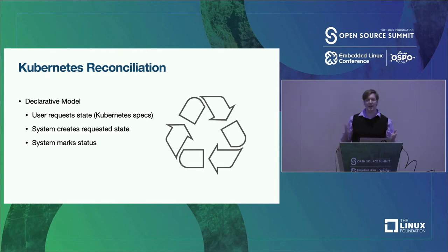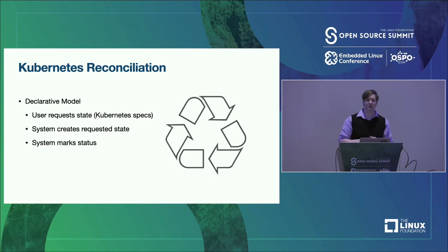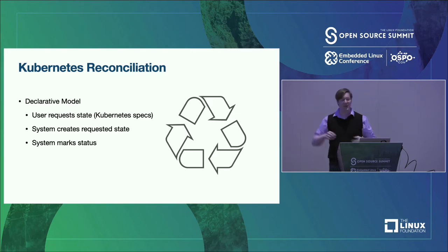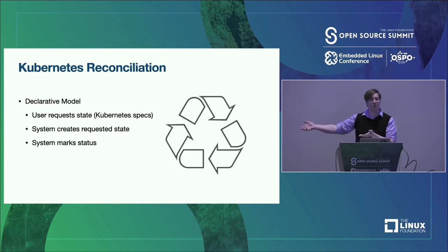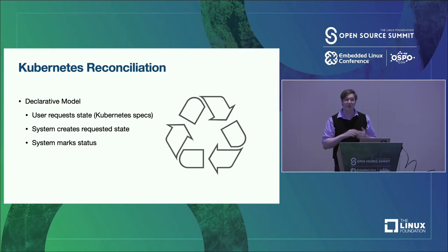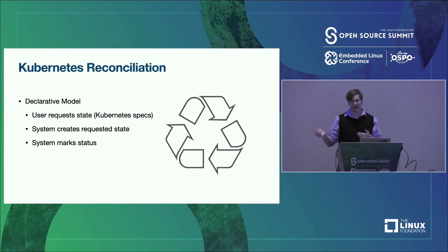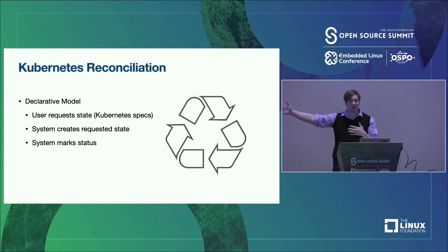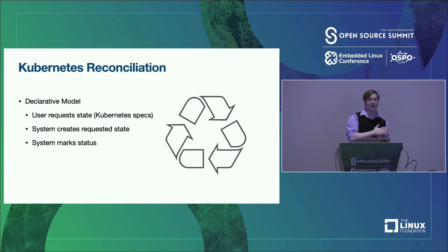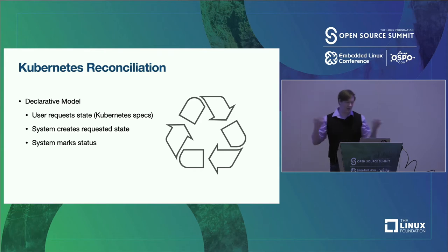Reconciliation is how stuff actually happens in a Kubernetes cluster. It follows a declarative model, which is a little weird because most people are more familiar with an imperative model. In Kubernetes, you interact with the cluster by requesting state — you say 'I would like three containers running this image,' and that state is written to an etcd store in the cluster. At some later date, that state will become true. Controllers in the background then create computing resources based on that requested state, come back, and mark records with the actual running status. Eventually, after many iterations, desired and actual state will match — until they don't, and then we start all over again.